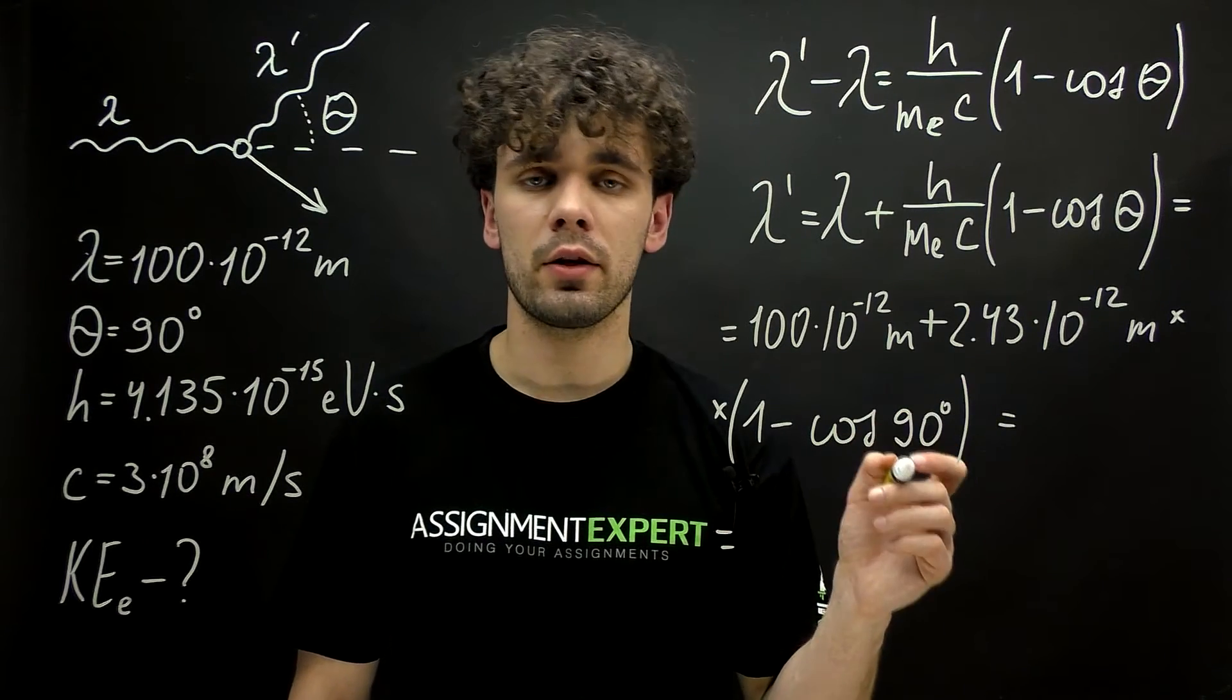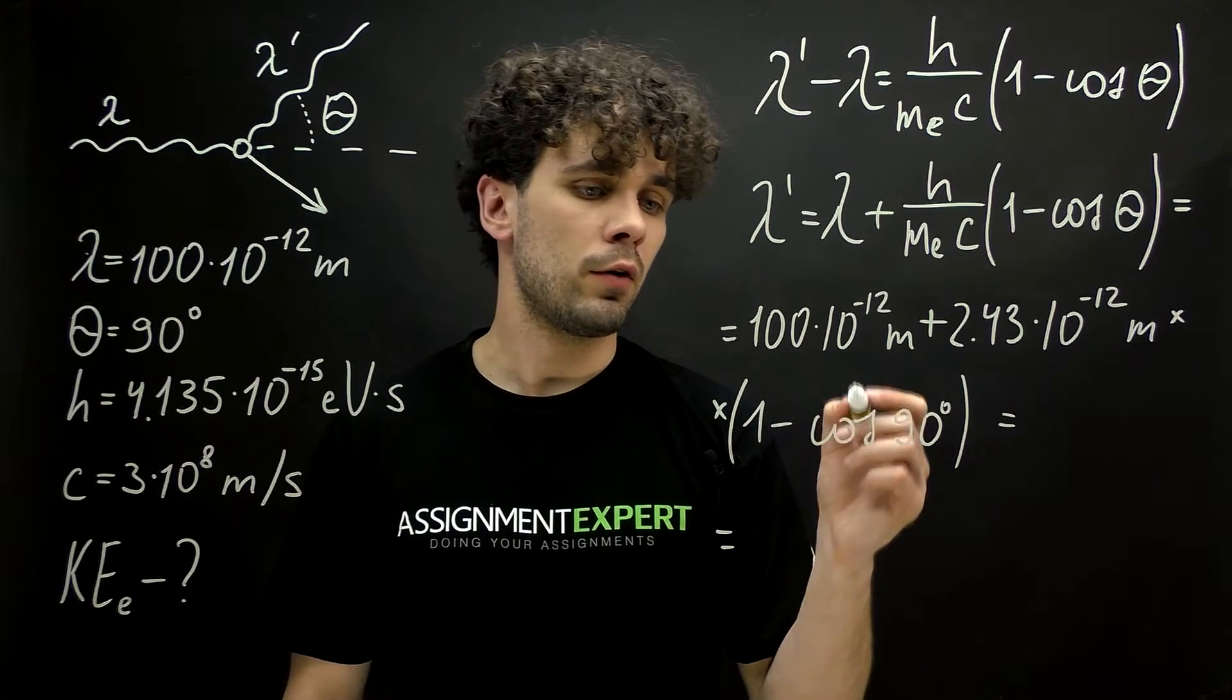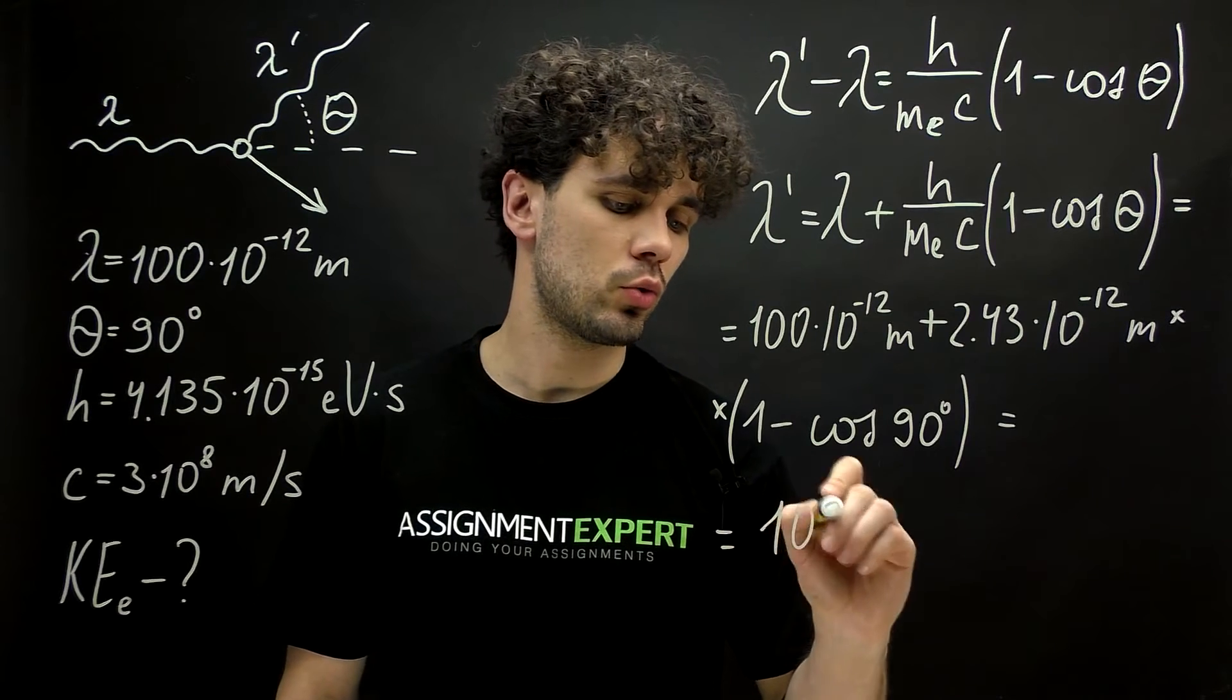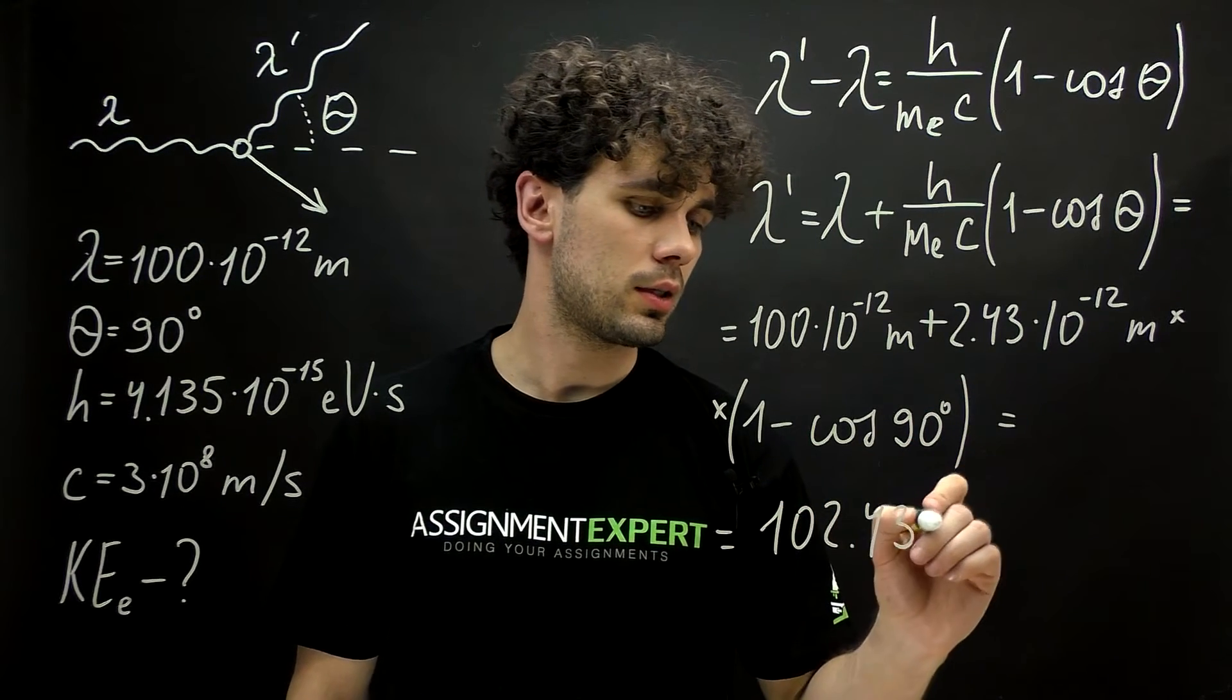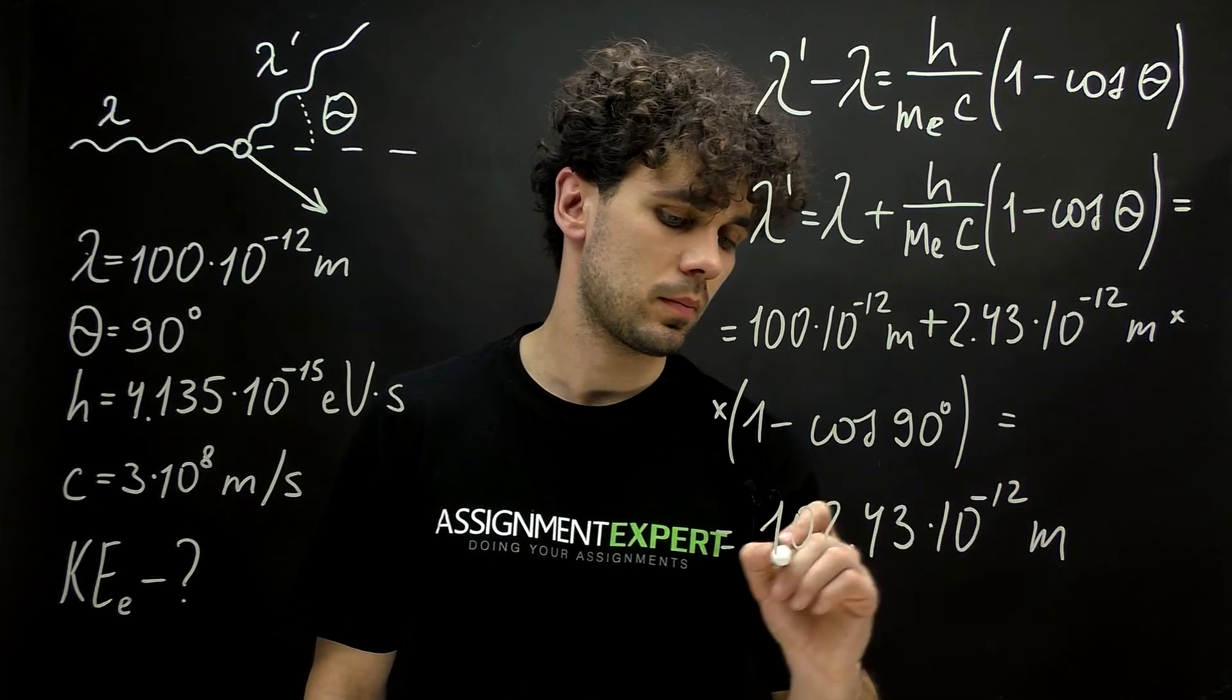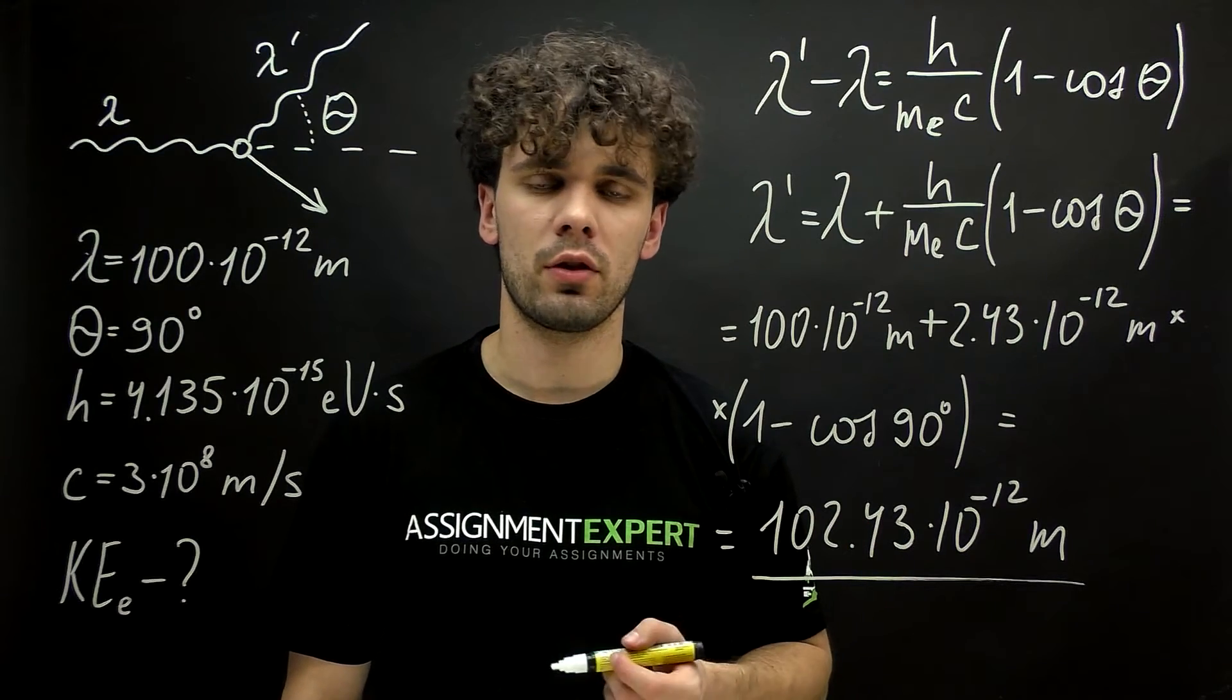Now, cosine of 90 degrees equals 0. So, in braces we get 1. Therefore, we just need to add these two terms. And we get 102.43 times 10 raised to the negative 12 meters. And this is the wavelength of the photon after the collision.